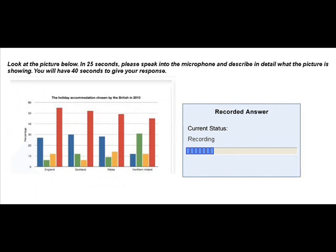This graph is showing the holiday accommodation chosen most and least by the British in 2010. It compares self-catering, caravan, camping,